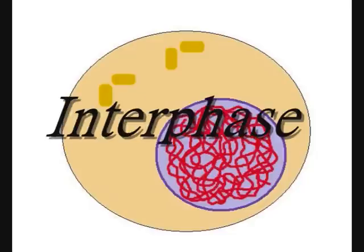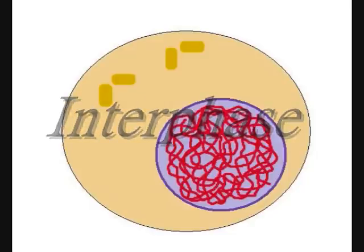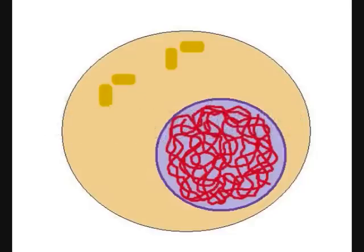The first stage of meiosis is interphase. During interphase, the cell gets ready for meiosis by duplicating its chromosomes and centrioles.